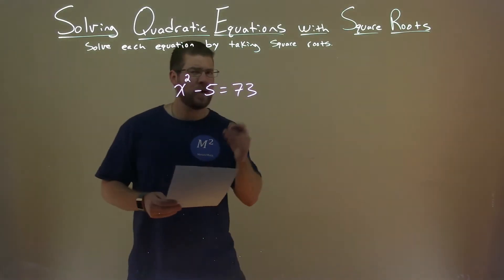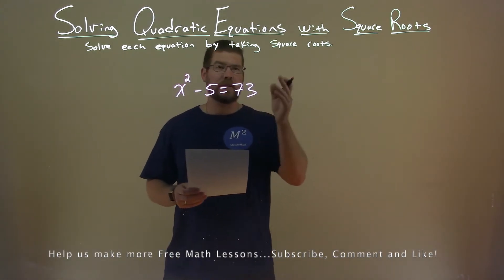We're given x squared minus 5 equals 73, and we want to solve this equation by taking square roots.